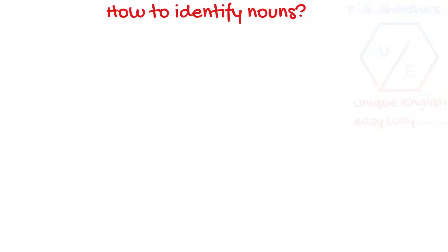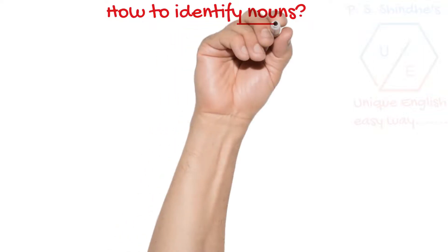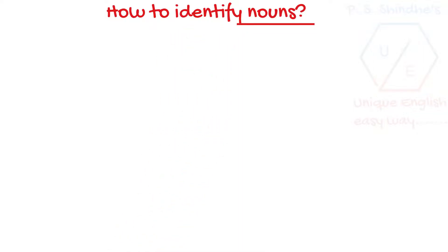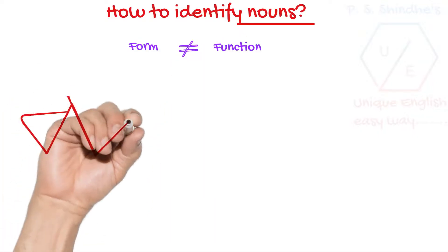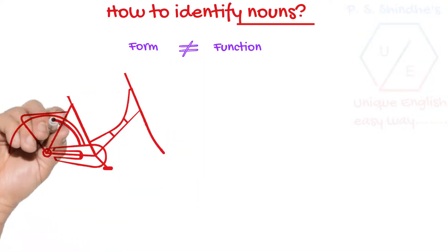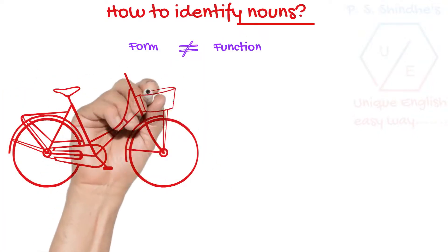We all know that a noun is the name of a place, person, or thing. Surprisingly, it is not that easy to identify a noun from a given sentence because the form of a noun is not always equal to its function. Everything depends upon certain clues which help us to identify nouns.